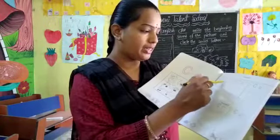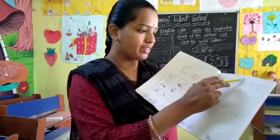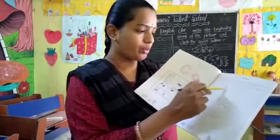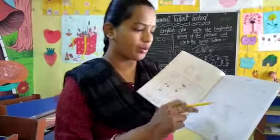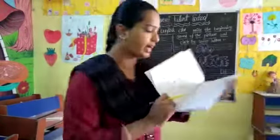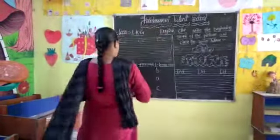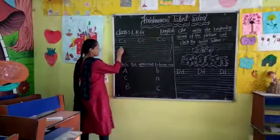Open page number 19. In the upside, classwork is there. You have to write in that page, children. See the board and write. This is the capital C and small c.